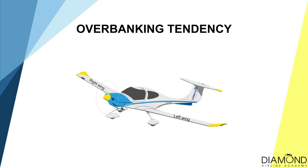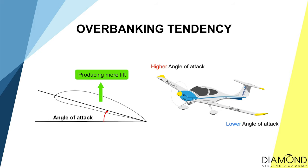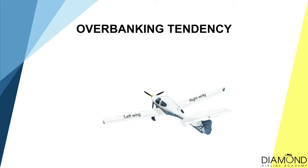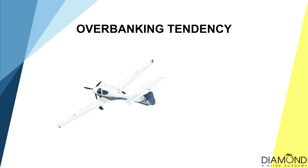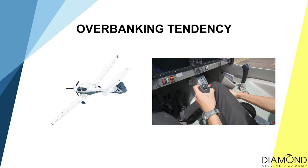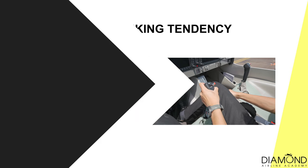Secondly, the right wing travels a greater distance than the left wing, giving it a greater angle of attack, and because of that, the right wing will create more lift. In summary, considering both factors together, the outer wing creates more lift than the inner wing — hence the overbanking tendency. To overcome this tendency and maintain 15 degrees angle of bank during a climbing turn, we apply a bit of opposite aileron so the aircraft maintains its angle of bank.